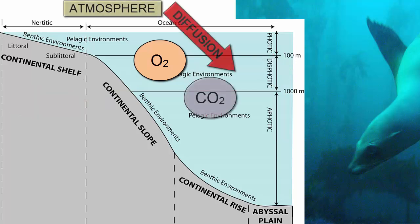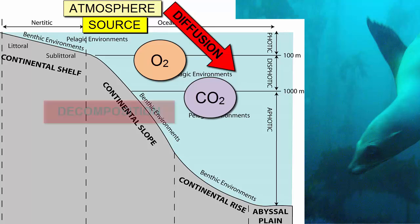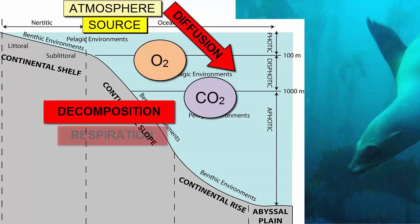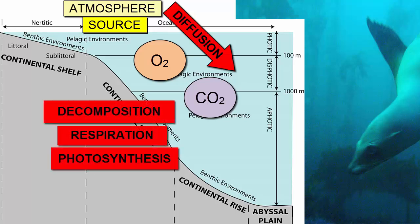Diffusion from the atmosphere is where most of the ocean's carbon dioxide and oxygen originally came from. The distribution of that carbon dioxide and oxygen within the ocean is primarily controlled by rates of decomposition, respiration, and photosynthesis.